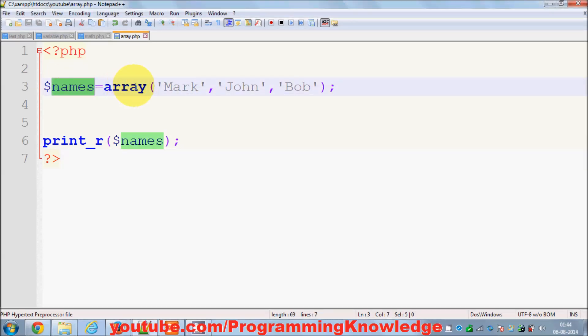showed you how to declare an array and provide elements to it. Each element according to their position has a key. So the name 'Mark' has the key of 0, 'John' has 1, and 'Bob' has the key of 2. The key starts from 0, 1, and 2. It's a really